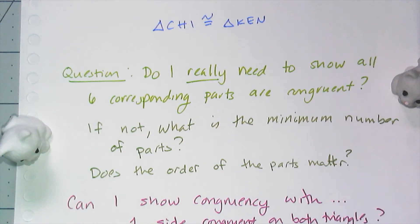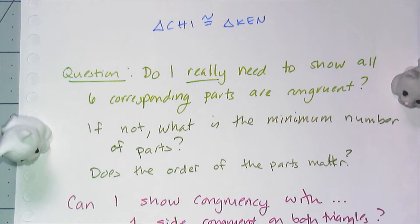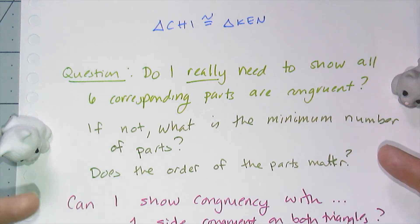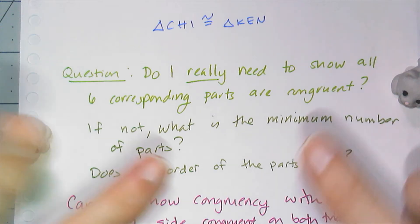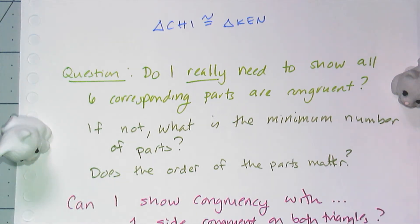Now I have a question, and it really stems from a little bit of laziness. If I'm going to show that two triangles are congruent, do I really need to show that all six corresponding parts on both triangles are congruent? Do I have to show all three sides and all three angles are congruent? I certainly hope not, because that's a lot of work. So what is the minimum number of parts I need, and does the order in which those parts appear in the triangle matter?